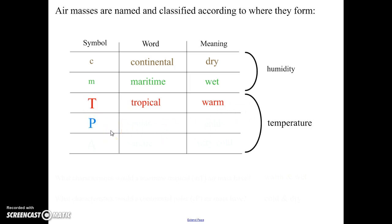If it's a cold air mass, we use a capital P, which represents polar. So think about air closer to the North Pole or the South Pole. That would be very cold.